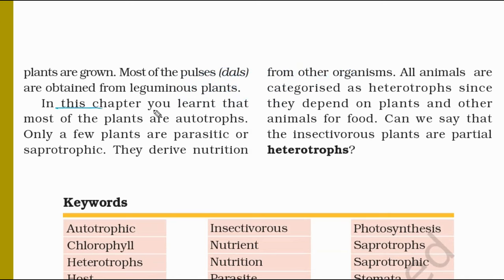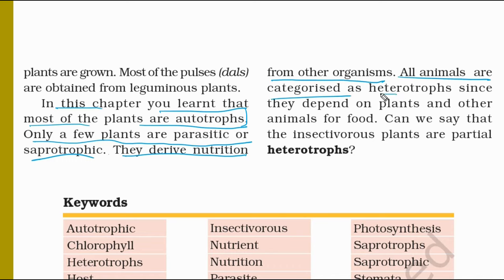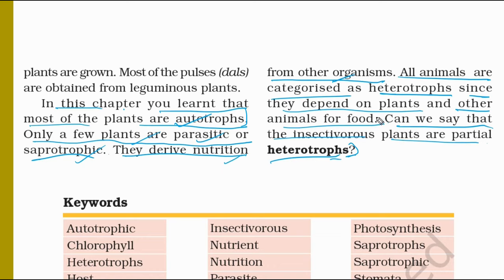In this chapter, we learned that most plants are autotrophs. Only a few plants are parasitic and saprotrophic, deriving nutrition from other organisms. All animals are heterotrophs since they depend on plants and other animals for food. Insectivorous plants can be considered partial heterotrophs. Thank you, have a nice day.